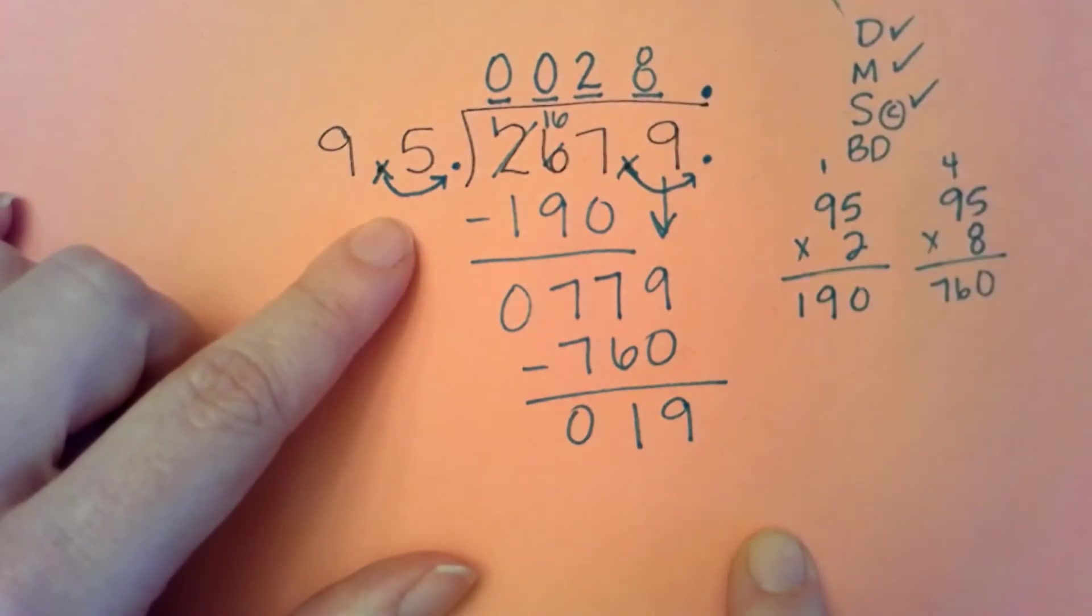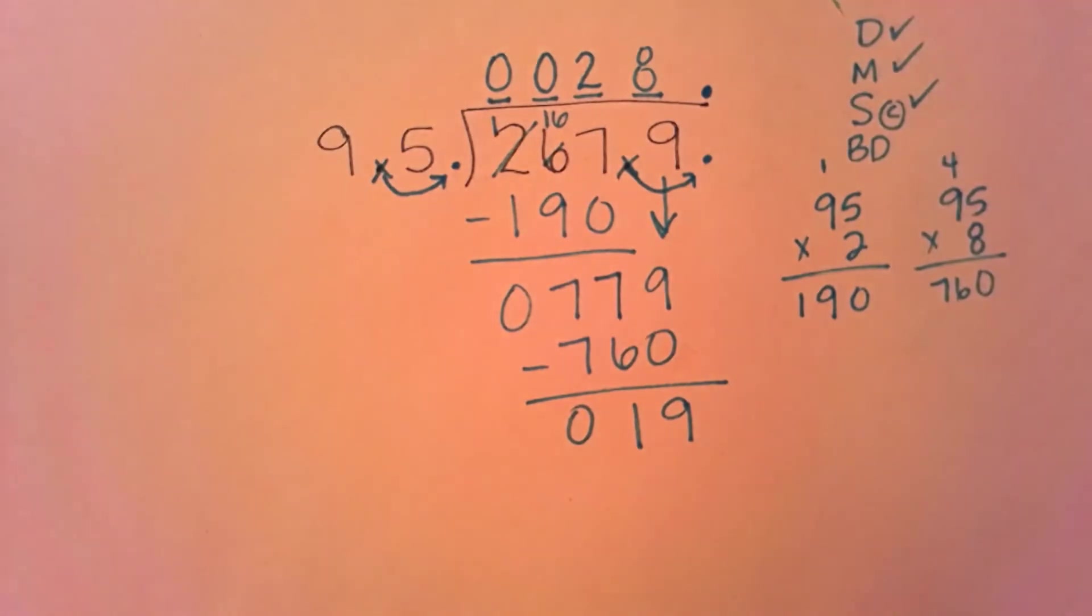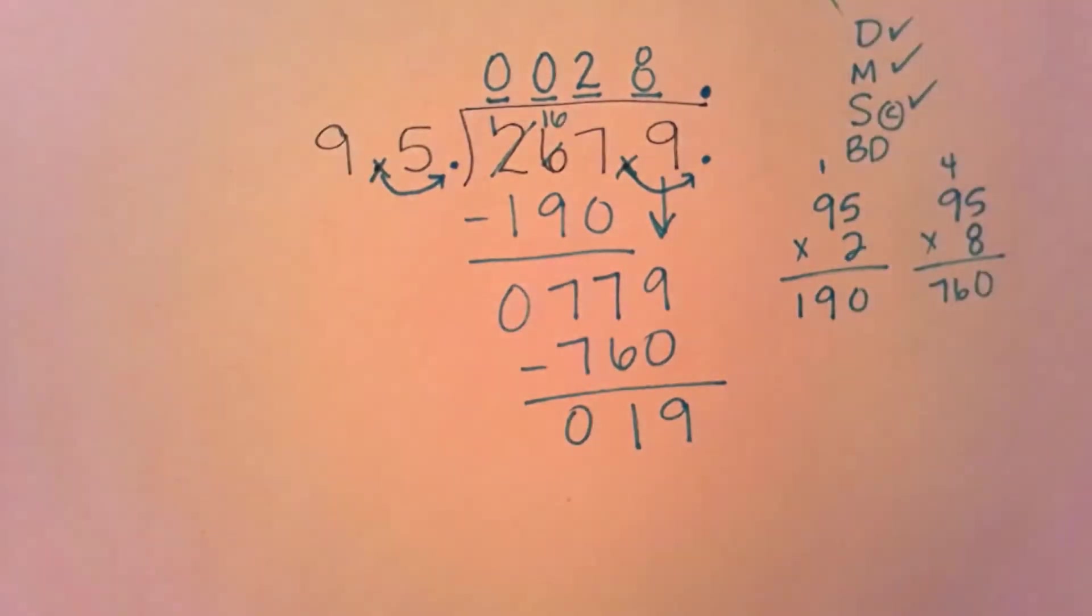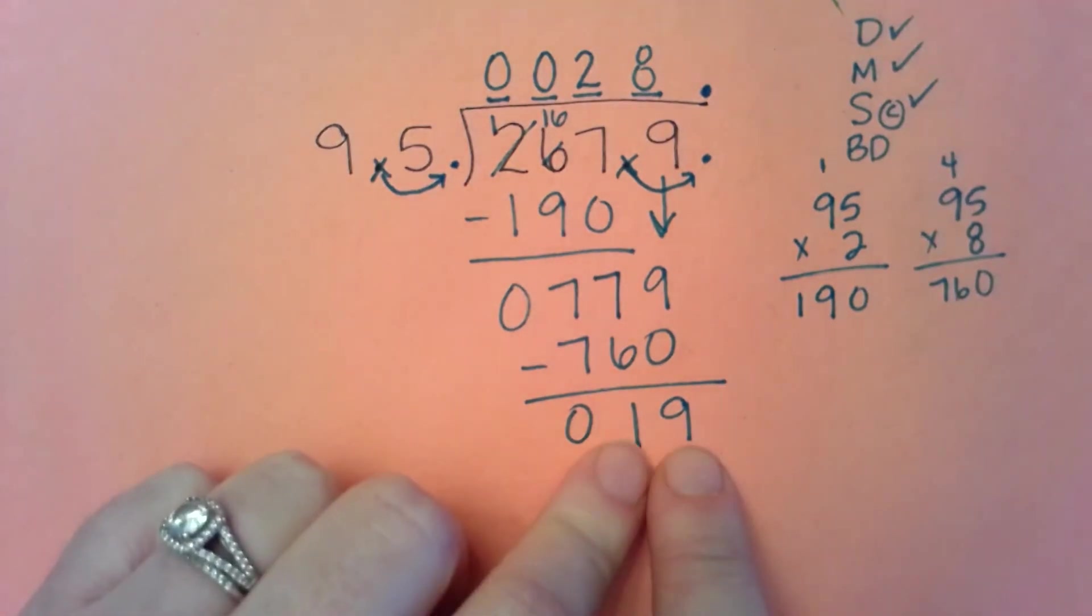Now, there's nothing to bring down. So sometimes, and especially if this were just a problem that you were given like this, you might report it as 28, remainder 19. But the problem with 28, remainder 19 is that really that remainder 19 without context doesn't mean very much to us. So instead, when I look at this 19, I'm noticing it's pretty similar to what I'm seeing over here.